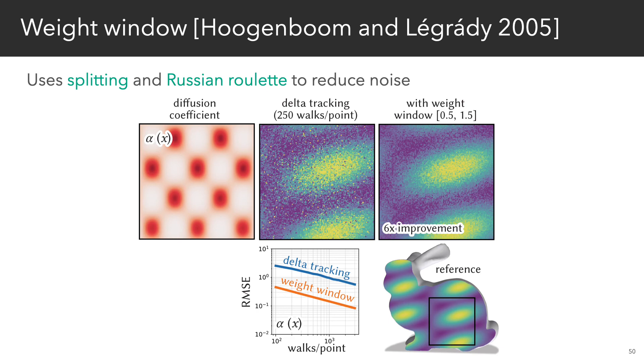Finally, on problems with high frequency coefficients, standard variance reduction techniques in Monte Carlo rendering, such as Russian roulette and splitting, provide similarly dramatic improvements for our algorithm, here providing a 6x speedup. Runtime performance also improves in this case, since walks are often terminated early.